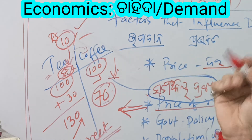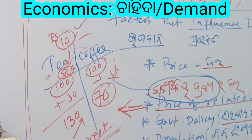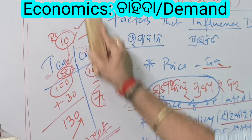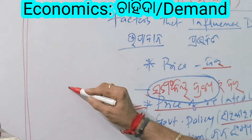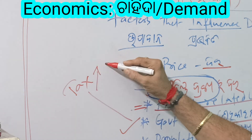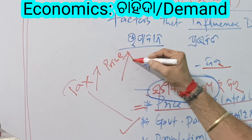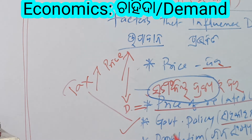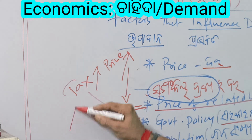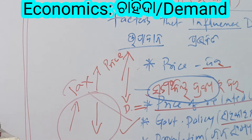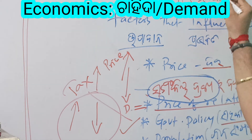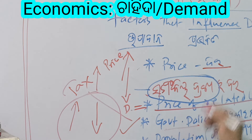The price of tea comes down and the demand for coffee comes down — direct relation. Next is Government Policy. If tax rises, the price rises, then demand comes down. So a change in government policy changes demand.